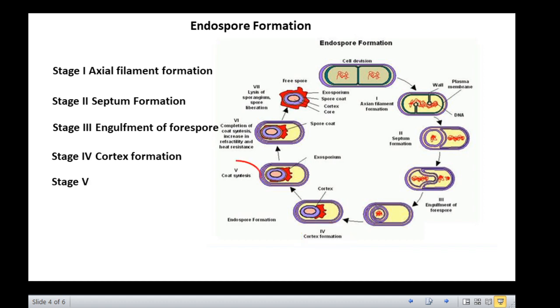The fifth stage is coat synthesis, during which a dense protein coat is formed over the outer spore membrane. This coat is composed of proteins which resemble keratin and are extremely stable and resistant. It forms a protective layer that is impervious to chemicals and harsh physical treatment and thus contributes to the resistance of the spore.